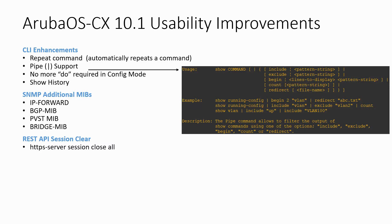There are also a lot of usability improvements. The repeat command allows you to have the switch automatically repeat a command. For example, if you want to show some interface statistics every 5 seconds, you'll see the result appearing in the CLI without the need to type the command yourself. And whereas with release 10.0 you always had to prepend each command with the DO word when in configuration mode, this is not required anymore with release 10.1 — you can now run each command available in global mode also in configuration mode without prepending with DO.